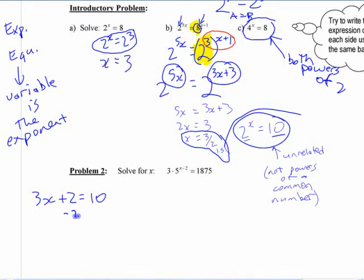To do this, you first deal with the 2, and then you deal with the 3, right? So it's no different here. You work backwards to try and isolate the x.